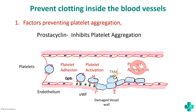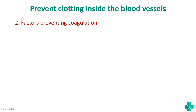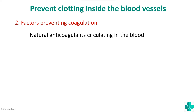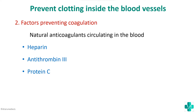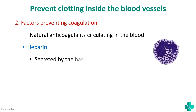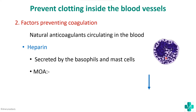Next, the factors that prevent coagulation. We have many natural anticoagulants circulating in the blood, which include heparin, antithrombin-3, and protein C. Heparin is secreted naturally by basophils as well as mast cells.